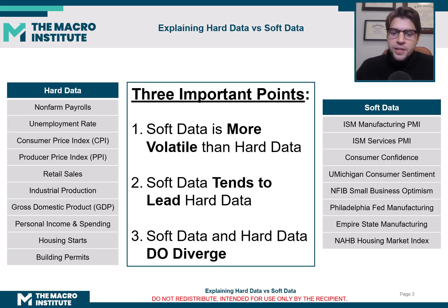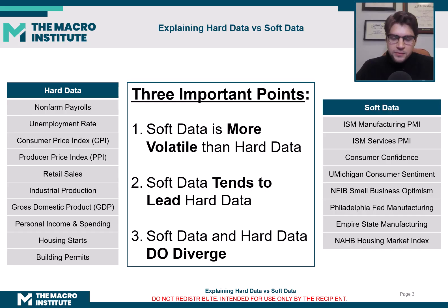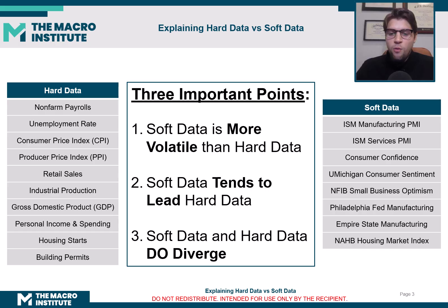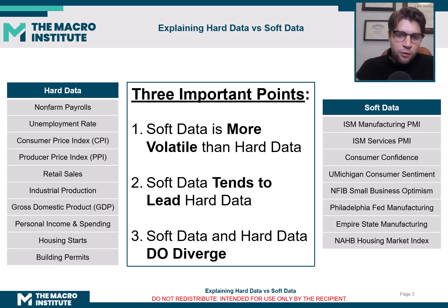Here we just list the Philly Fed and the New York Empire State one. And the housing market also has some soft data with the NAHB. Hopefully it makes sense why survey data is in soft data and the government-reported numbers are in the hard data.